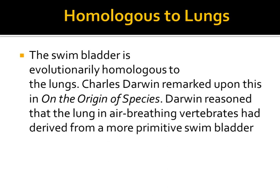According to Charles Darwin, the swim bladder is evolutionarily homologous to the lungs, meaning it is similar in position, structure, and evolutionary origin, though not necessarily in function. Darwin reasoned that the lungs in air-breathing vertebrates had derived from a more primitive swim bladder. The swim bladder occupies the same position as the lungs of higher vertebrates and is regarded as homologous to the lungs, but it differs from the lungs mainly in origin and blood supply.